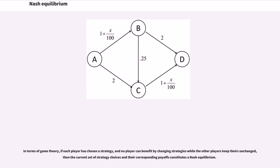In terms of game theory, if each player has chosen a strategy, and no player can benefit by changing strategies while the other players keep theirs unchanged, then the current set of strategy choices and their corresponding payoffs constitutes a Nash Equilibrium.